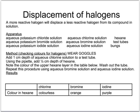You need to know the rule, which is that a more reactive halogen will displace a less reactive halogen from its compound in solution. Displace means push out, so one halogen pushes out another halogen from the compound that it used to be in.